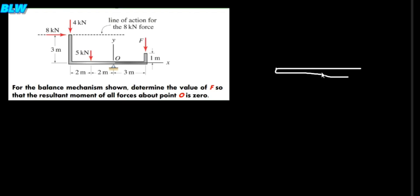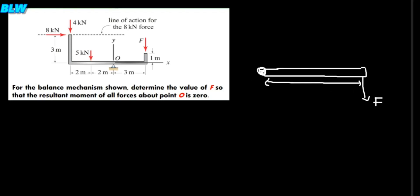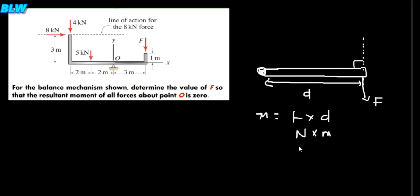Consider a door where the force is applied at the doorknob and the turning point is the hinge. When I apply this force, it causes the door to turn at that point. This distance d is the perpendicular distance from the axis of rotation to the line of action of the force — this is called the moment arm. So the moment equals force times the perpendicular distance, with units of Newton-meters.